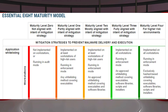As far as implementation goes, the Essential Eight is based on a maturity model, so it allows you to check firstly where you are and secondly where you would like to be. Using application whitelisting as an example, maturity level zero means that you do not do it at all.